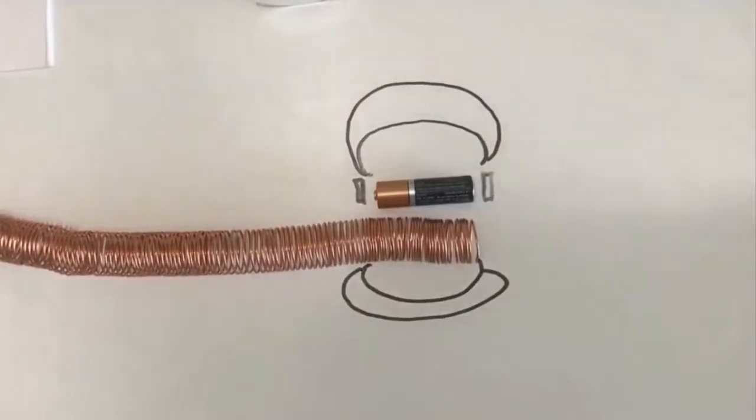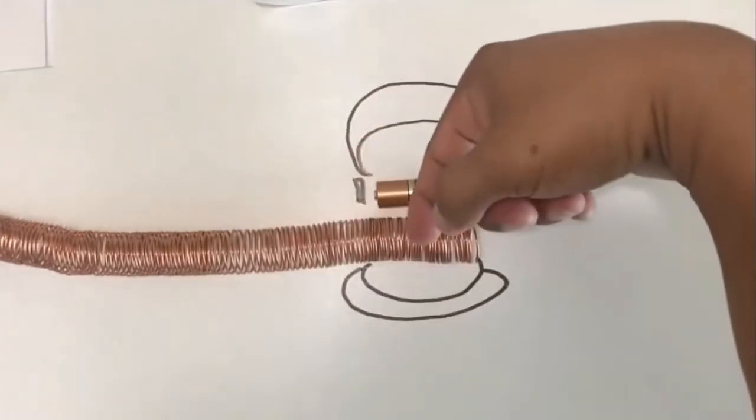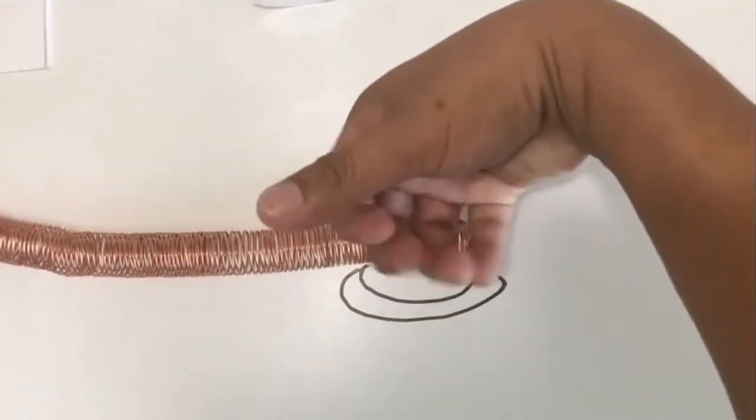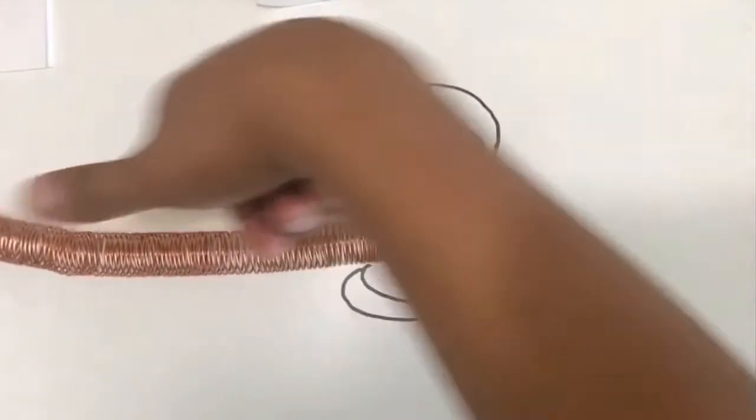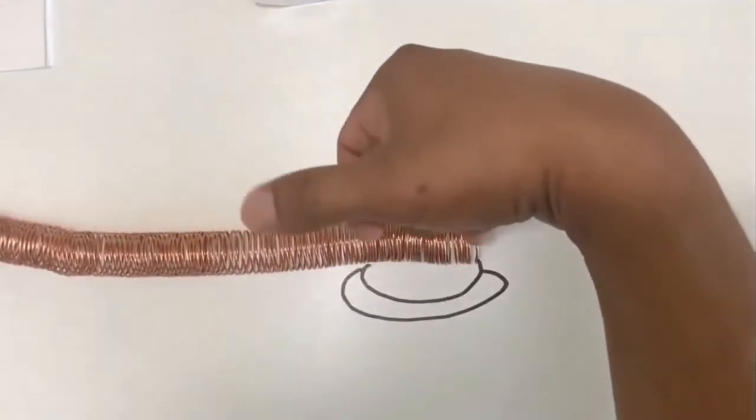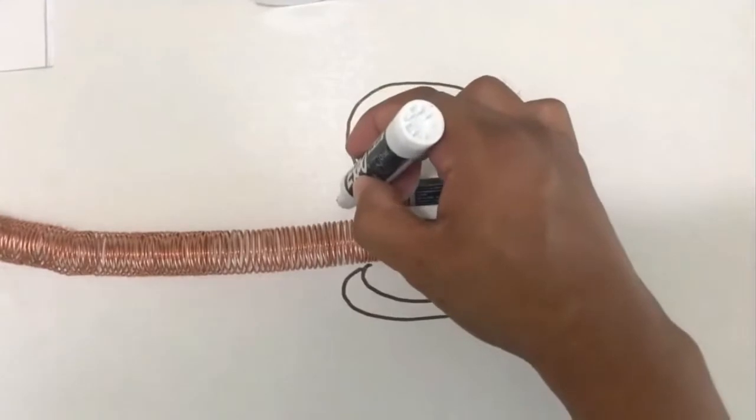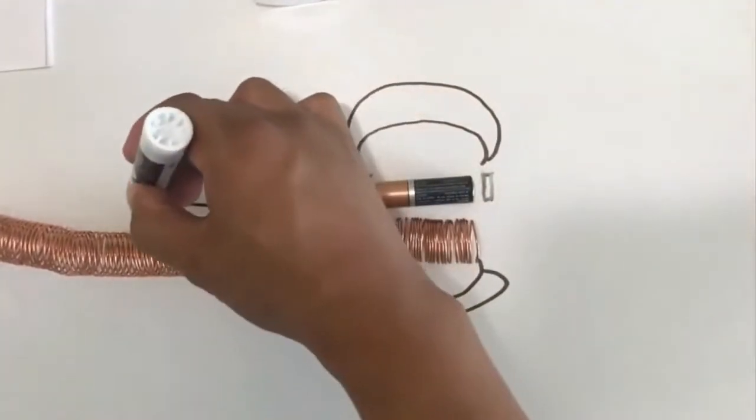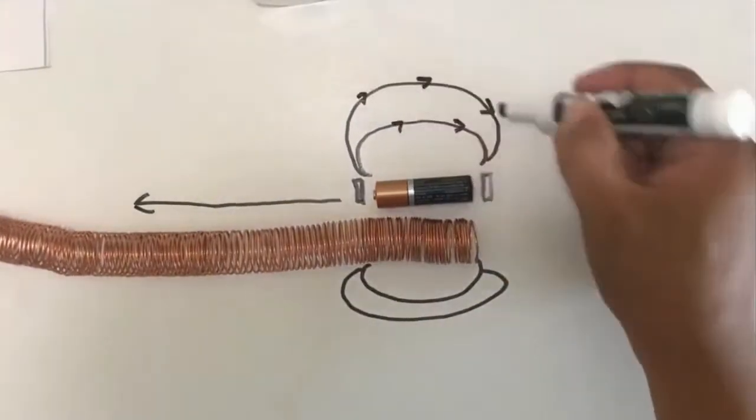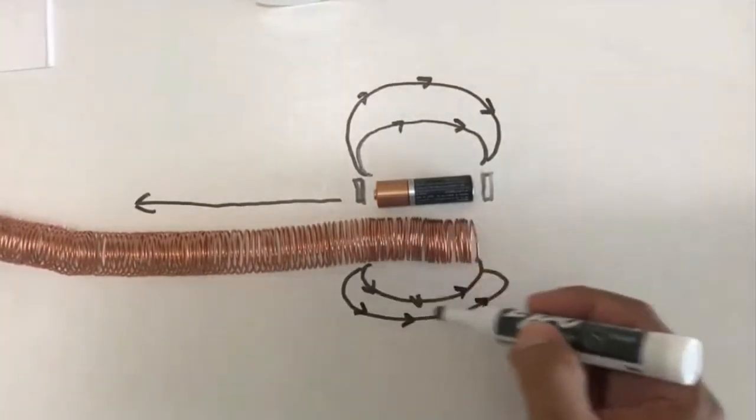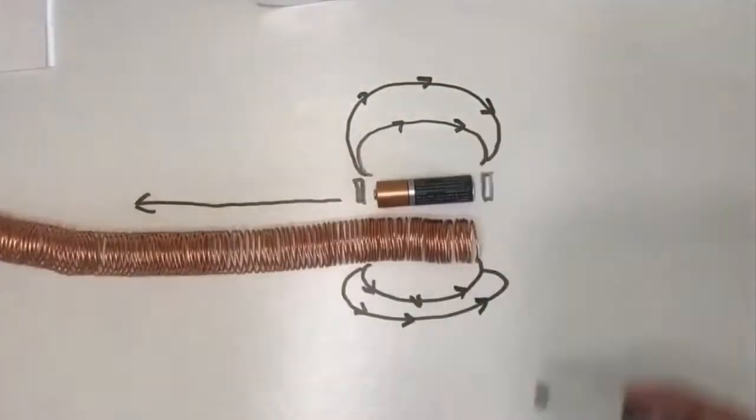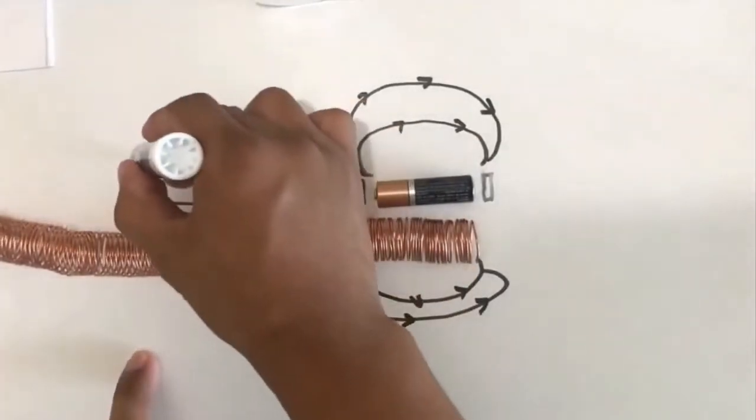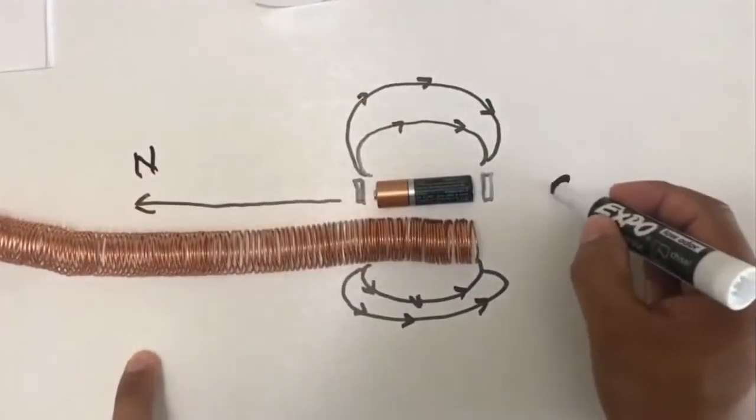And using the right hand rule, if we coil this wire along the direction of my fingers, the direction of the magnet would be going to the direction of my thumb. So we'll have a magnetic field that's moving in this direction. So the force of the magnet would be going like this and then it will be forced that way. And we now say that this is the north pole and this is the south pole.